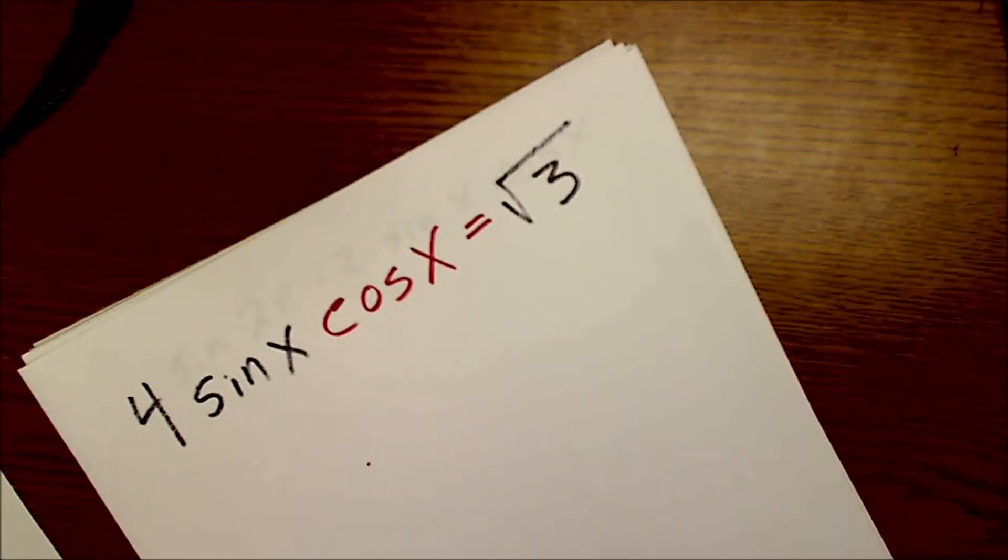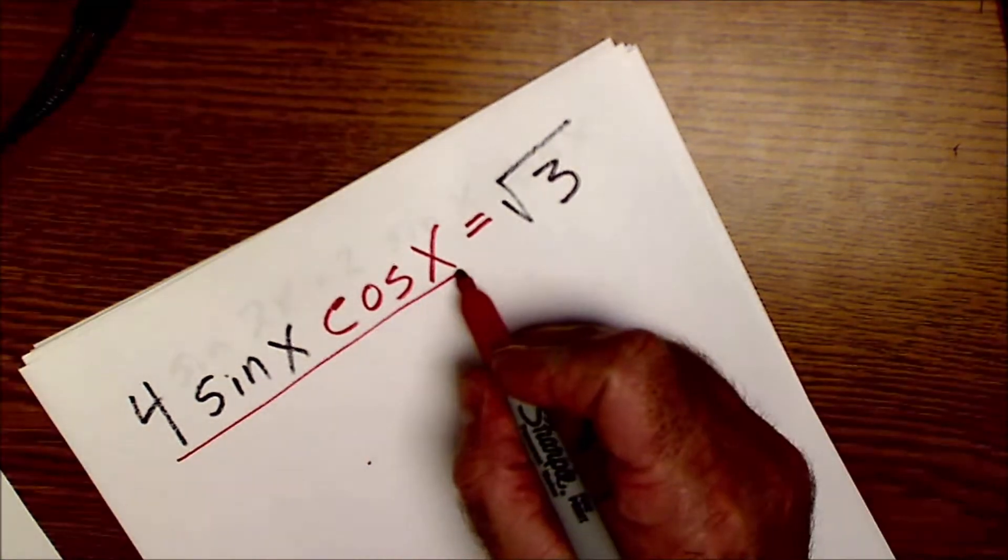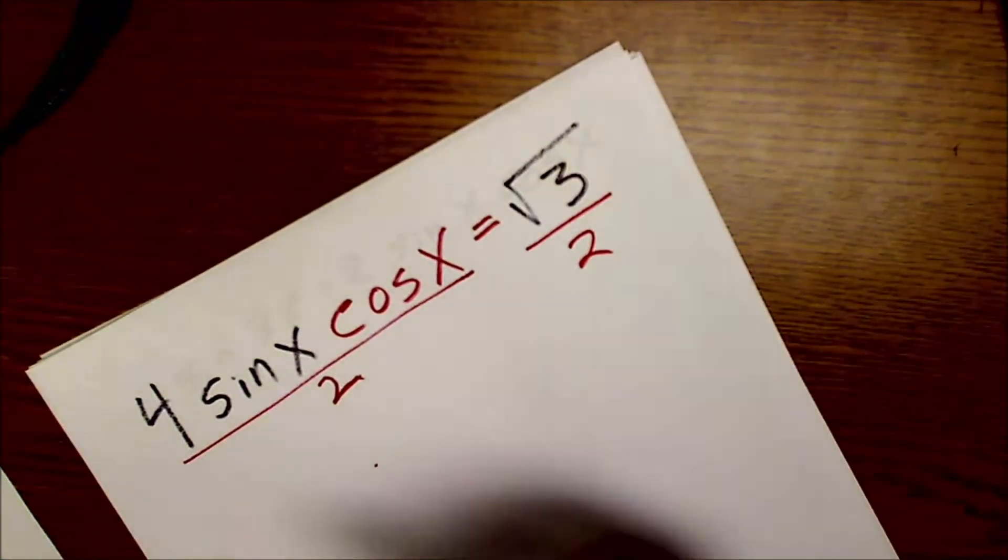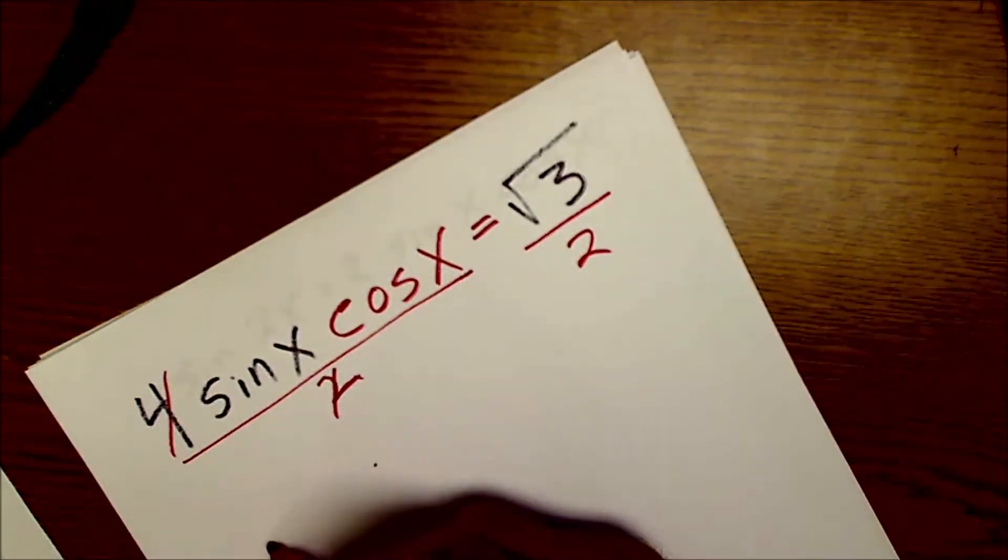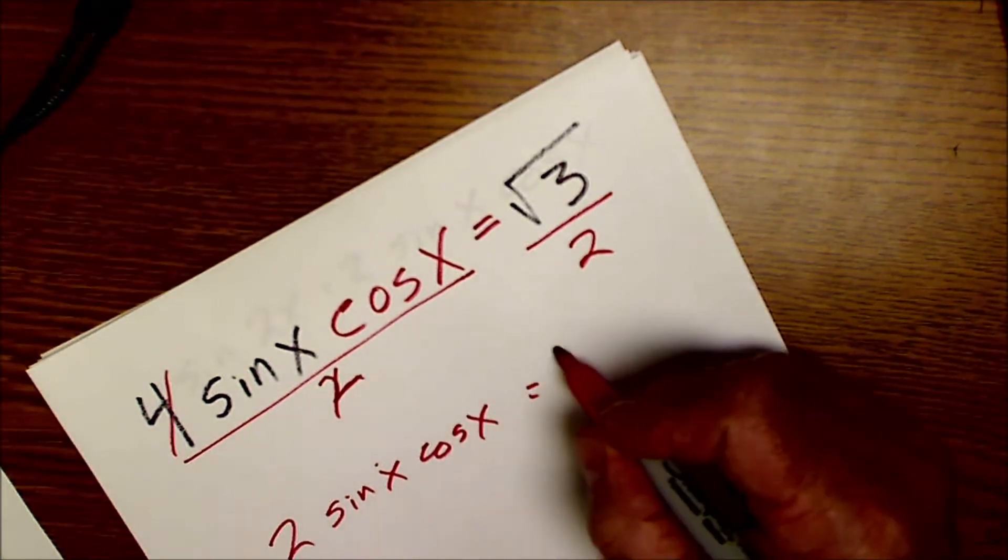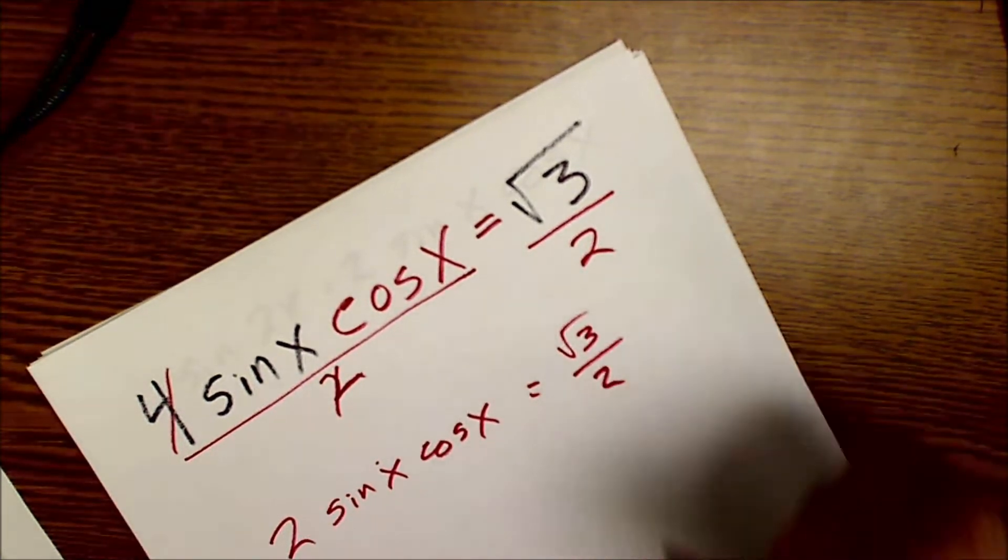So the way I get there is I divide both sides by 2. Dividing both sides by 2, 4 divided by 2 is 2. Now I have 2 sine of x cosine of x is equal to root 3 over 2.